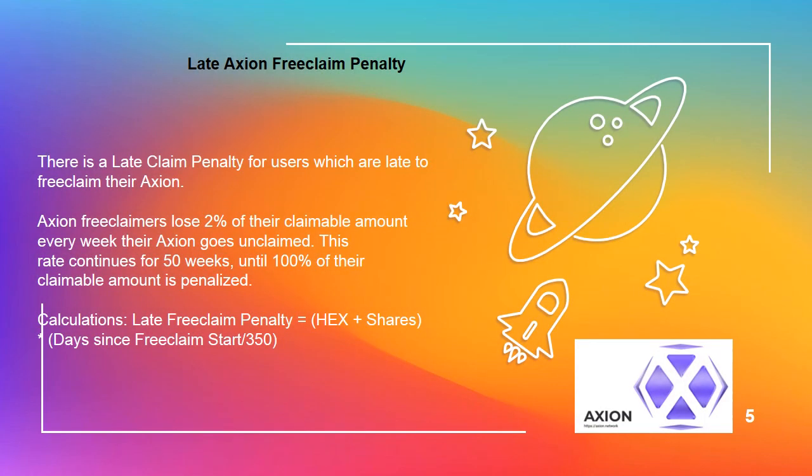Late Axion free claim penalty. There is a late claim penalty for users who are late to free claim their Axion. Axion free claimers lose 2% of their claimable amount every week their Axion goes unclaimed. This rate continues for 50 weeks, until 100% of their claimable amount is penalized.